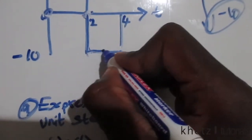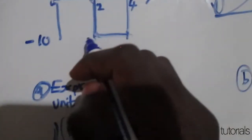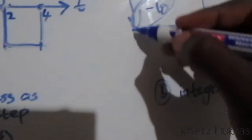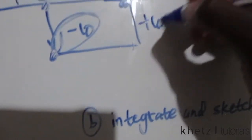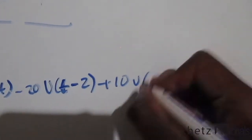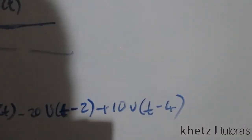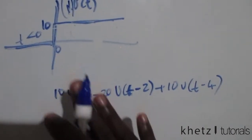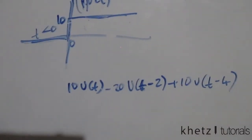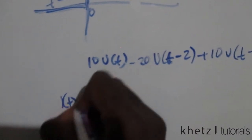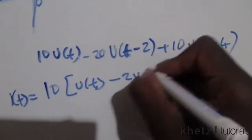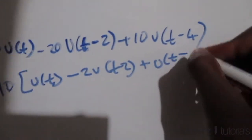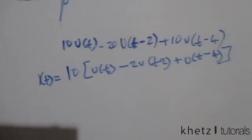At t=4 we move from -10 back to the baseline by adding 10. So the final expression, factoring out 10, is: i(t) = 10 [u(t) − 2·u(t−2) + u(t−4)]. That is how you express this diagram as a unit step function.